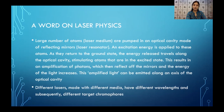What happens within the laser resonator or optical chamber is that the laser medium atoms that are pumped in get excited when an excitation energy is applied to them. As they return to the ground state, the energy released travels along the optical cavity, stimulating atoms already in the excited state. This results in amplification of energy, which is reflected off the mirrors so the energy of the light increases, and this amplified light can be emitted along an axis of the optical cavity.